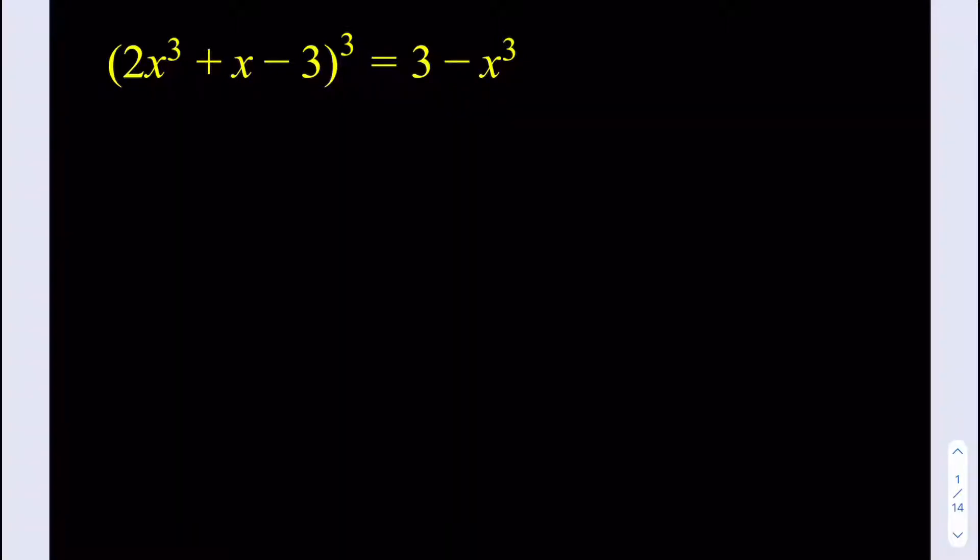We have this expression (2x³+x-3)³ = 3-x³. Obviously, if you just go ahead and expand this, you're going to be getting x to the ninth power, which is impossible to solve. You can find numerical methods, or if it's a really special type of equation, like symmetrical, but in general there is no solution. So we're going to be using a different method here, so please watch till the end to see how this unfolds.